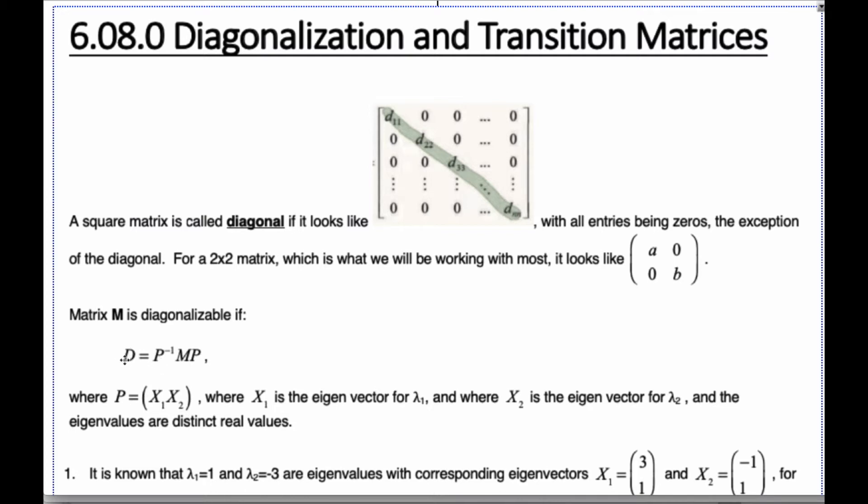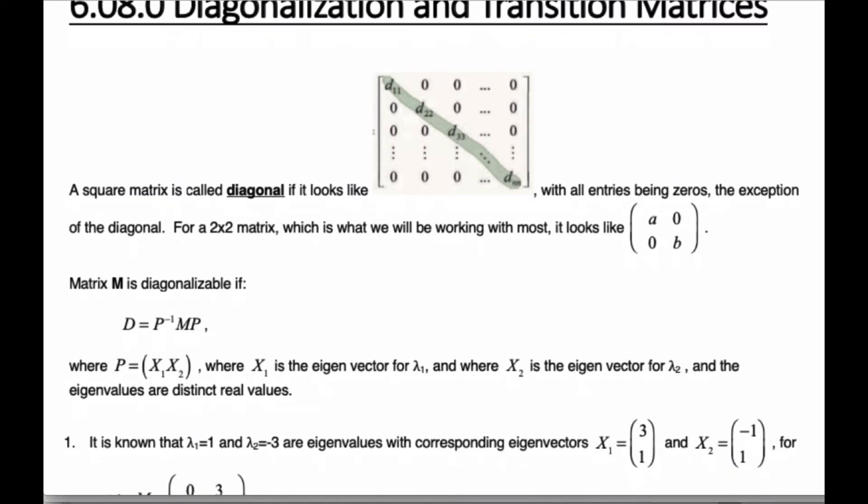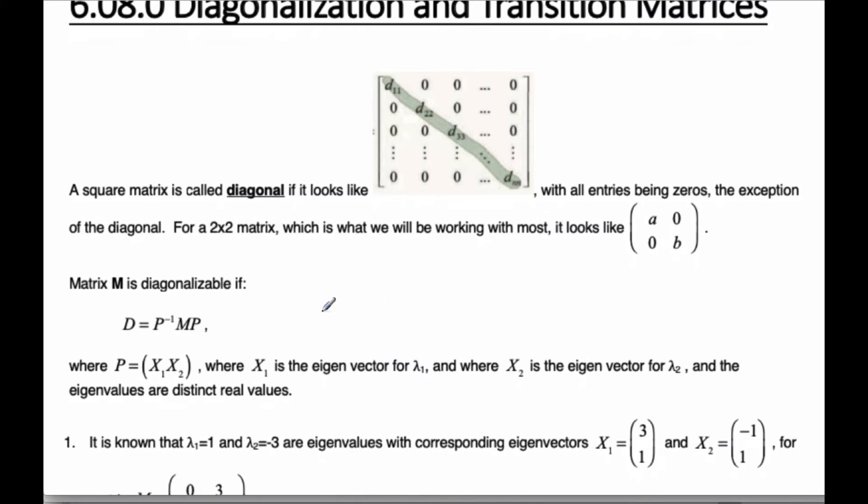And so the diagonal is equal to the inverse of P times M times P. And we can get the diagonalized matrices of M. So let's actually try an example and see if we can make some sense of this definition.